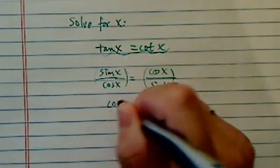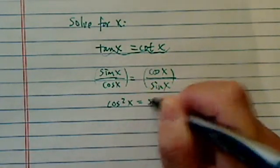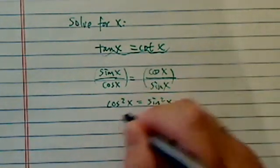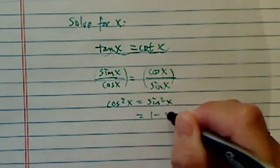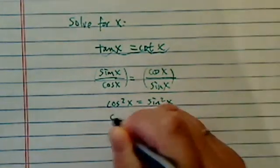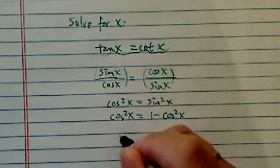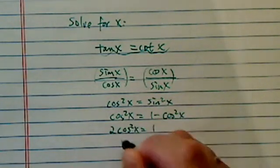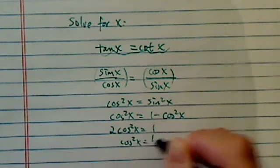And I'm going to cross multiply. I'm going to have cosine x squared equal to sine square x. And then using the fact that 1 minus cosine square x is sine, I'm going to combine them. So I have twice cosine square x equal to 1, or cosine square x equal to 1 half.